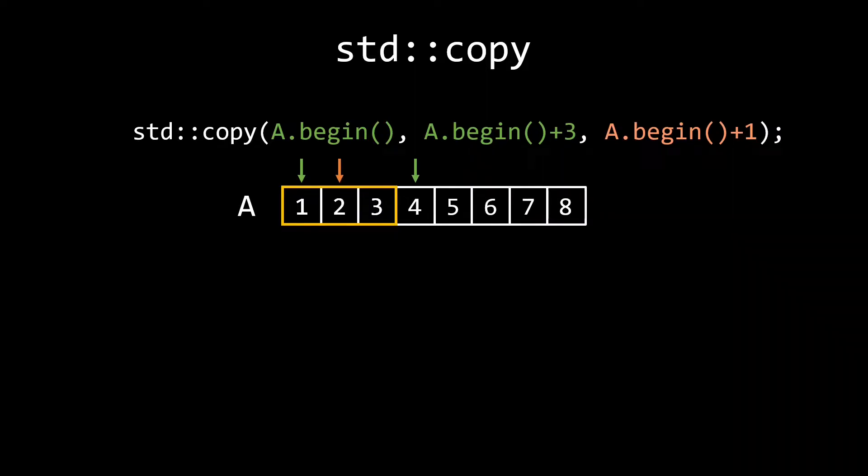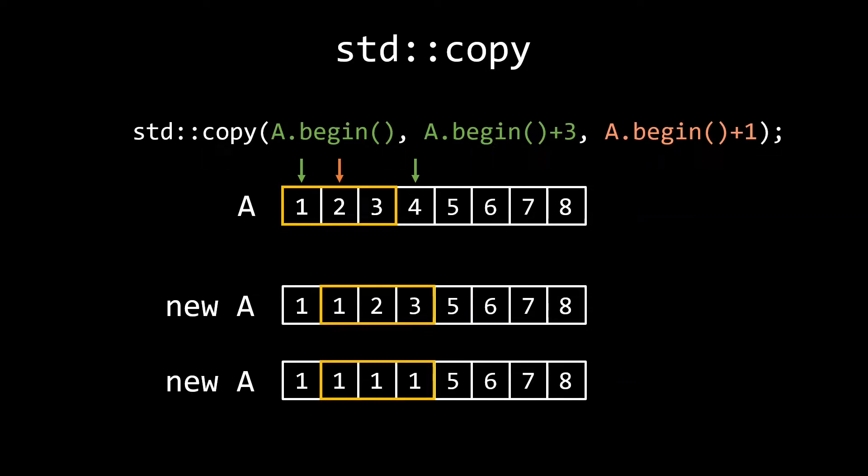Your code will still compile and it won't crash when running, but the result will probably not be what you expect. In this case, you might expect the result of the copy operation to be something like this, with the numbers 1, 2 and 3 copied to positions with index 1, 2 and 3. But you might end up with something like this. This happens because the elements are copied one by one. First the 1 at position 0 is copied to the output iterator, which is at position 1. The output iterator then moves to the next position, after which position 1 is read, which now contains a 1. That is copied to position 2, etc. If you do want to copy to a range that overlaps the source range, there is a different copy algorithm which we can use. And I'll get back to that in a bit.